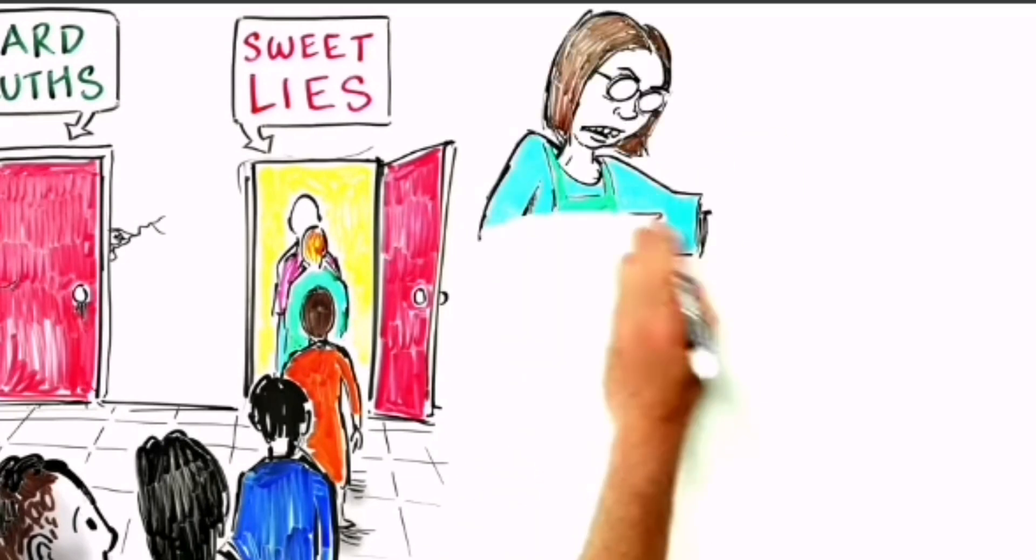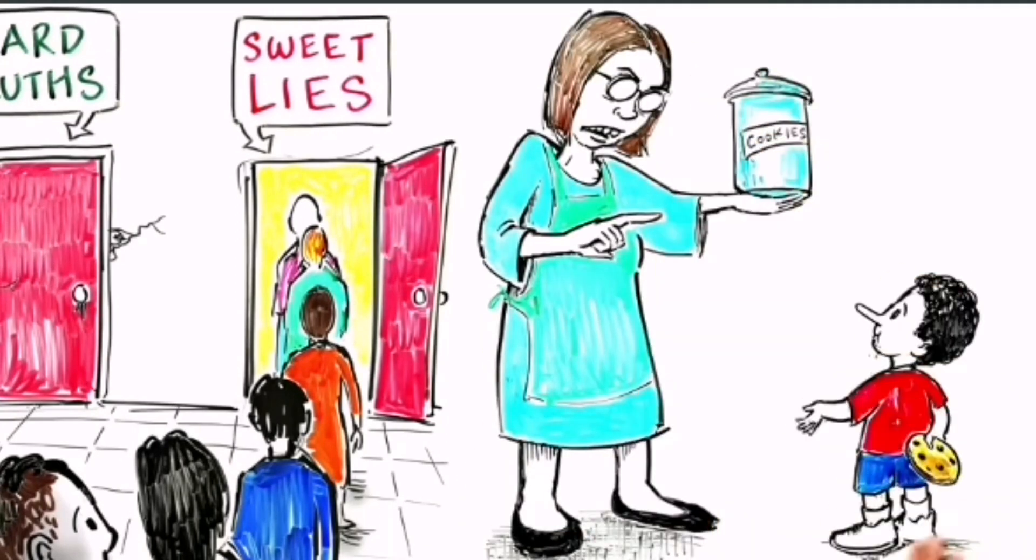Children begin lying as early as age two. The smarter the kid, the more likely they are to lie, and the better they are at it.